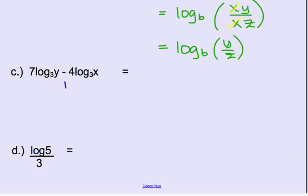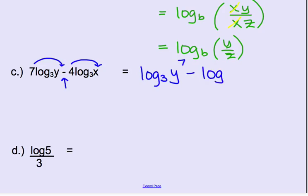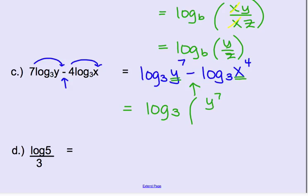Example C: before we condense, we must apply the third property and bring the multipliers back up as powers. We get logarithm base 3 of y to the 7th power minus logarithm base 3 of x to the 4th power. Now the operation between the two logarithms is subtraction, so to combine into one logarithm we divide: logarithm base 3 of y to the 7th divided by x to the 4th.